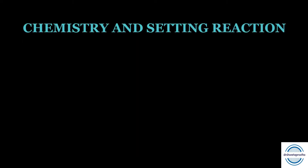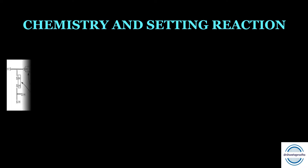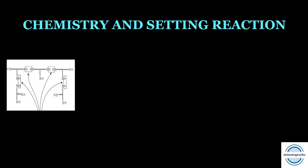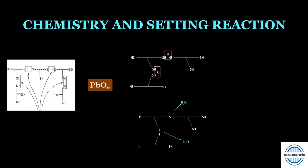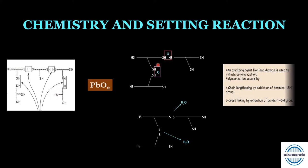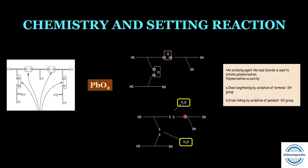In the setting reaction of polysulfide, lead dioxide acts as an oxidizing agent initiating polymerization. Oxidation of the terminal SH groups leads to chain lengthening, while oxidation of the pendant SH groups leads to cross-linking. This reaction yields water as a byproduct.